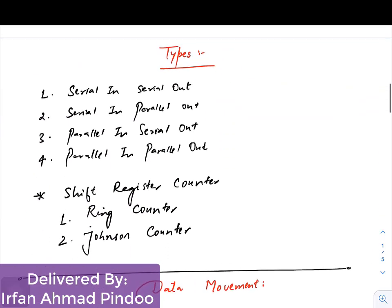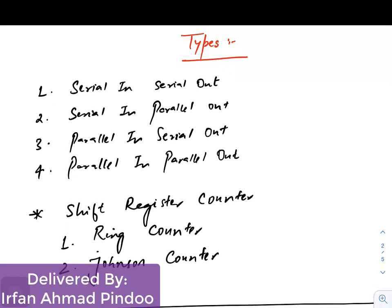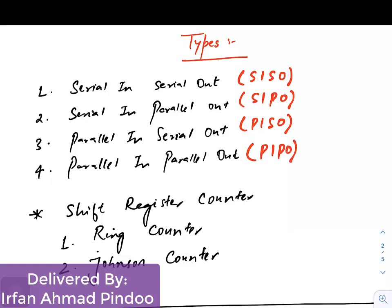There are four different types of registers. The first is Serial In Serial Out (SISO), the second is Serial In Parallel Out (SIPO), the third is Parallel In Serial Out (PISO), and the fourth is Parallel In Parallel Out (PIPO). In SISO, input is serial and output is serial. In SIPO, input is serial and output is parallel.